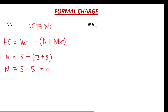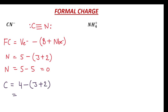Now let's calculate formal charge for the carbon atom. Number of valence electrons for carbon is 4, minus number of bonds which is 3, plus number of non-bonded electrons which is 2. So 4 minus (3 plus 2) equals 4 minus 5 equals minus 1. Formal charge on carbon atom is −1.